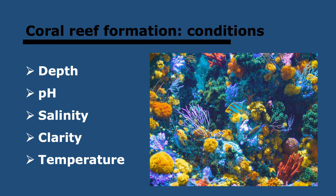Coral reefs are marine ecosystems which can only develop where conditions are suitable for hard corals to form — they need to be within a range of tolerance. Factors include depth: less than 50 meters so light can penetrate. pH must be above 7.8 to allow calcium carbonate deposition in the skeleton. Salinity needs to be between 32 and 42 parts per thousand of dissolved ions. Water must be clear, as turbidity prevents light penetration. Temperature needs to be between 23 and 29 degrees Celsius.